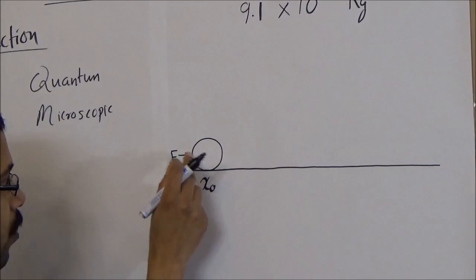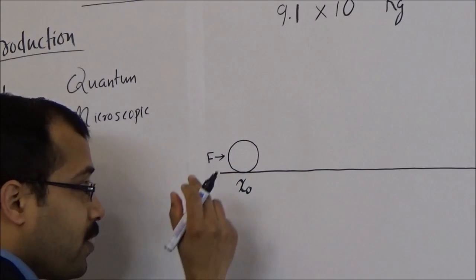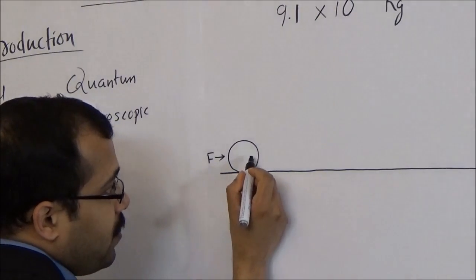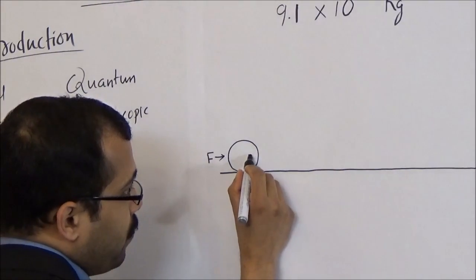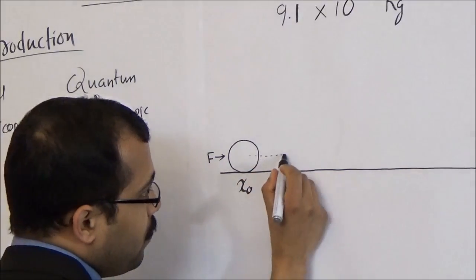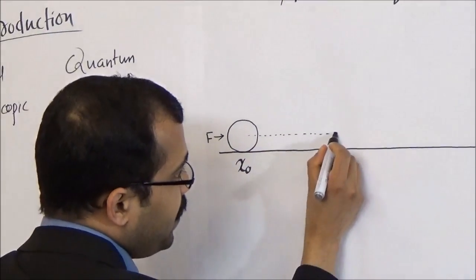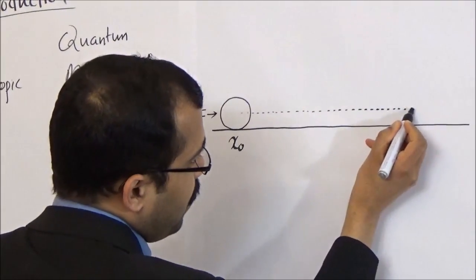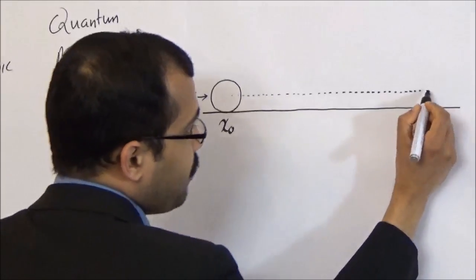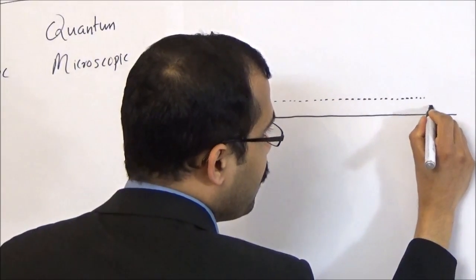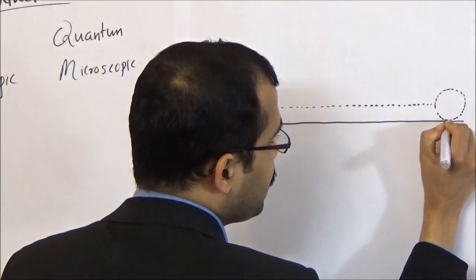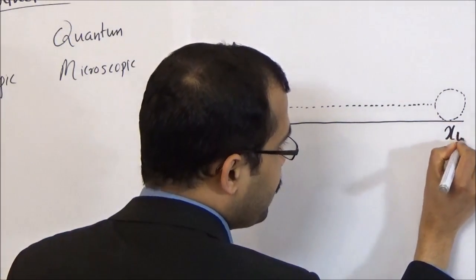A force F is applied on this ball. Obviously the ball is a macroscopic object. And due to the force F, the ball will start to move, but it experiences friction from the surface and after a certain time T, the ball will come to rest at this position xT.